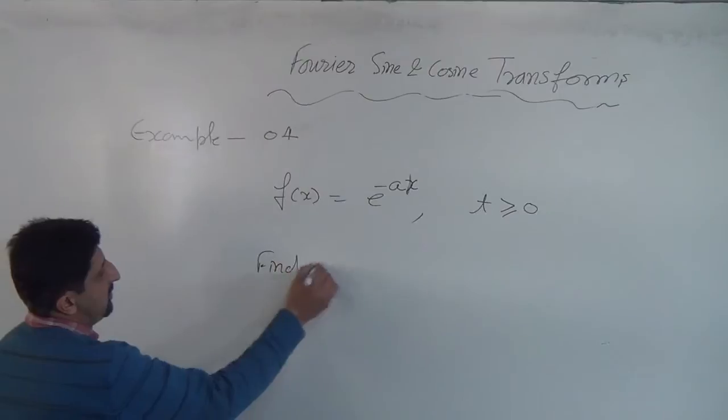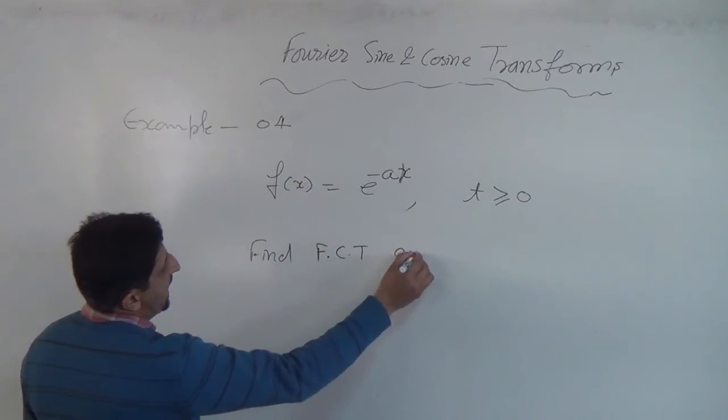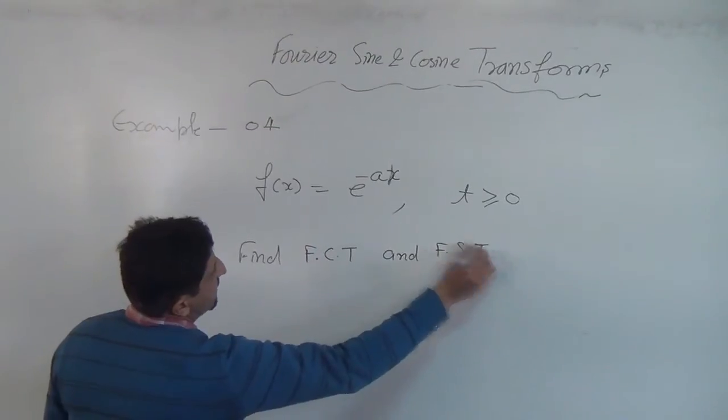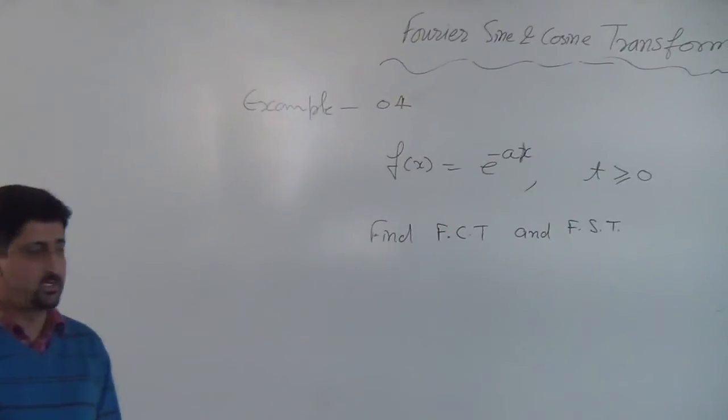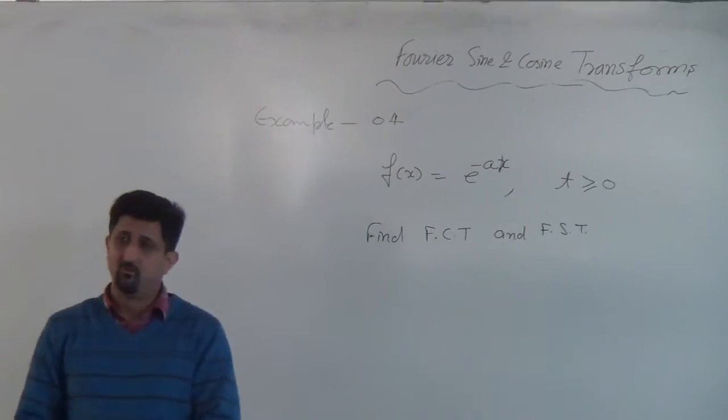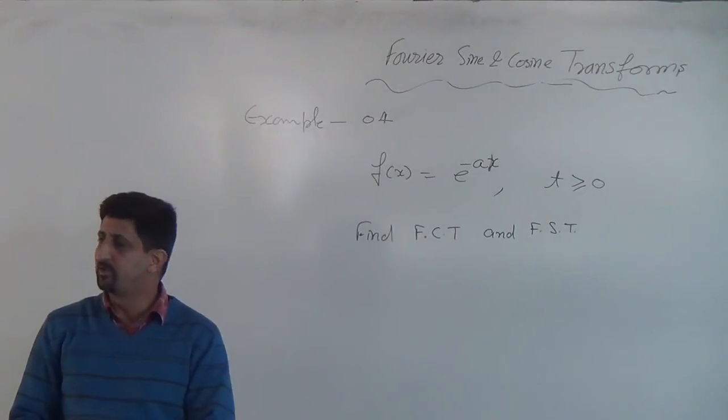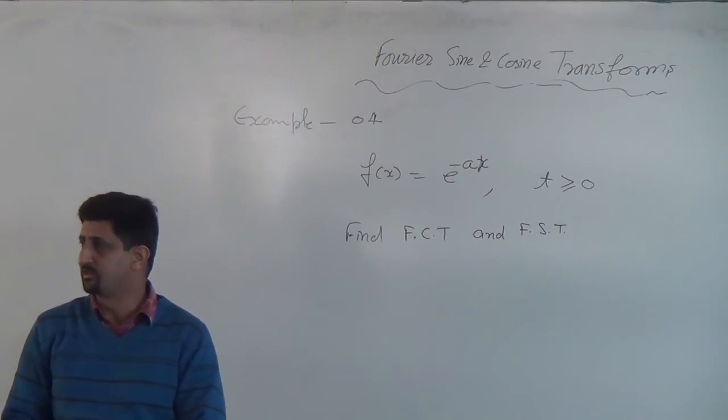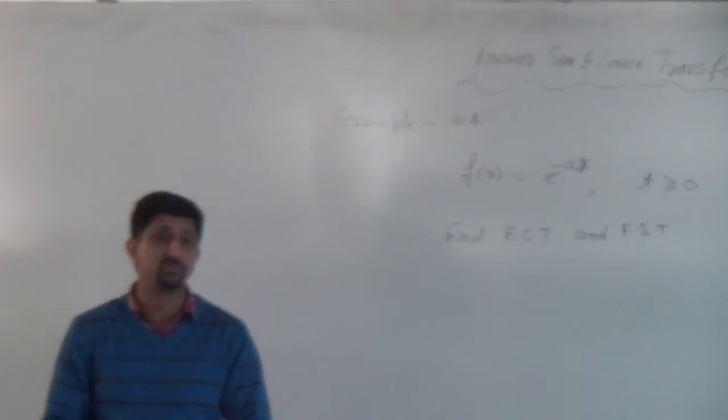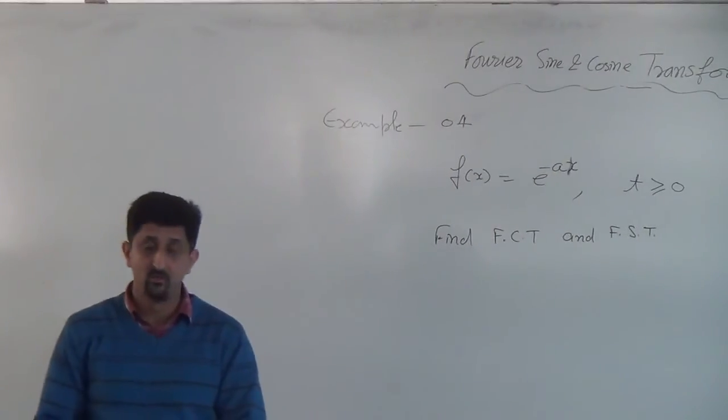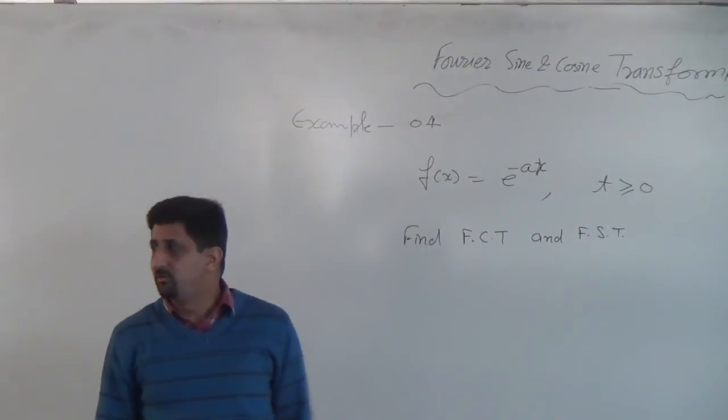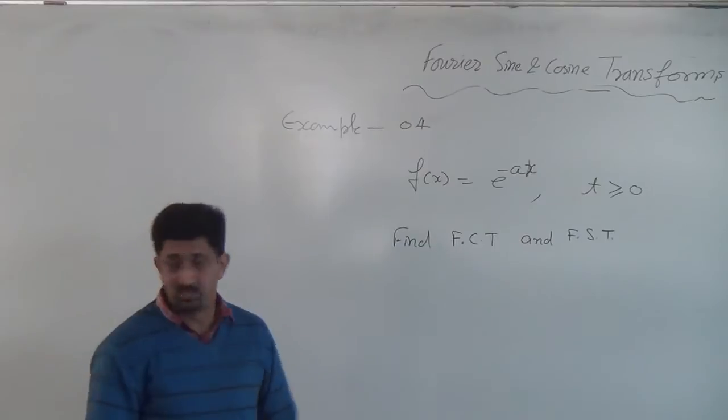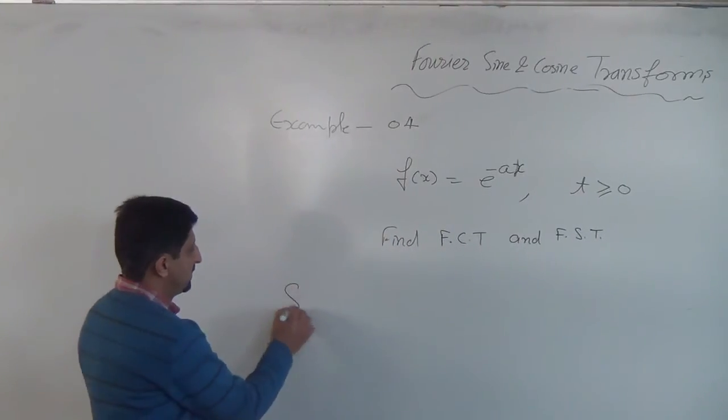Find Fourier cosine transform and Fourier sine transform for this mathematical function. The statement can be written about a kind of signal which decays exponentially. We switch it on as time t equal to zero till infinity.